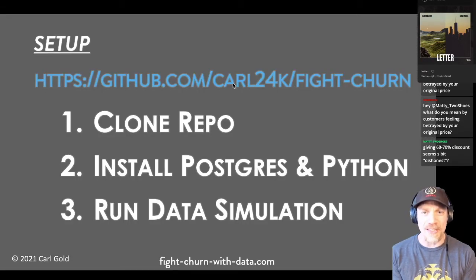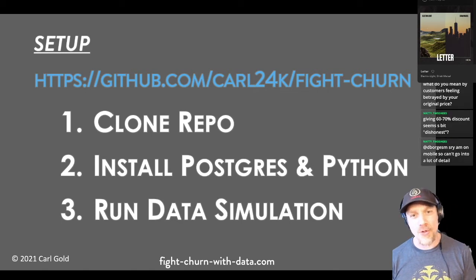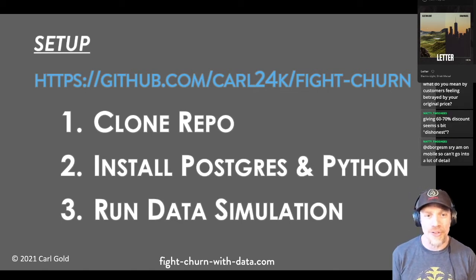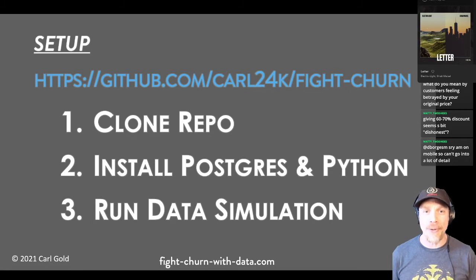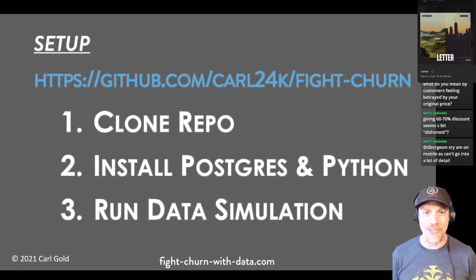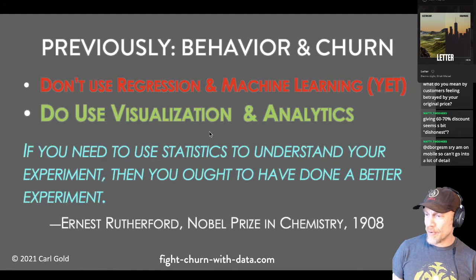If you want to set this up, it's all on my GitHub repo, which is carl24k/byte-churn. You have to clone the repo, install Postgres and Python, and then run a simulation to produce all that data. I've been building up a lot of stuff with the data for weeks — we're up to about chapter seven and eight of the book at this point.